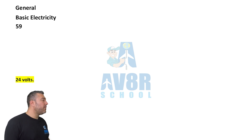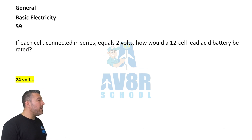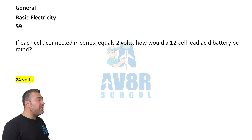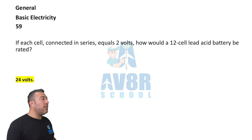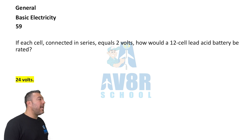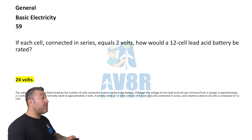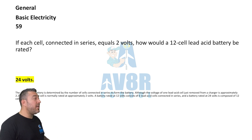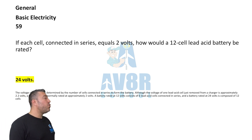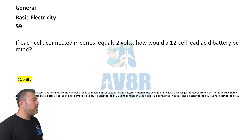Question 59. If each cell connected in series equals 2 volts, how would a 12-cell lead acid battery be rated? You have 12 cells at 2 volts each — multiply those together — 24 volts.